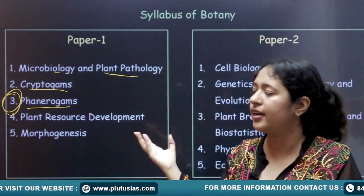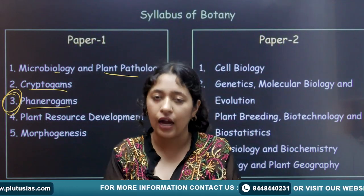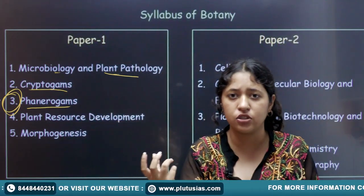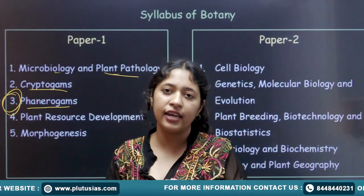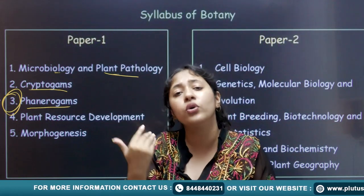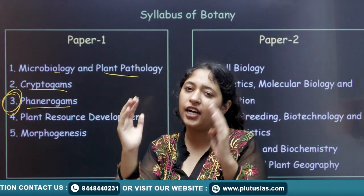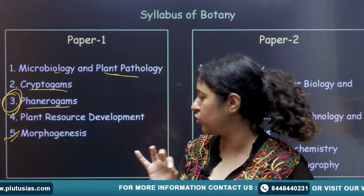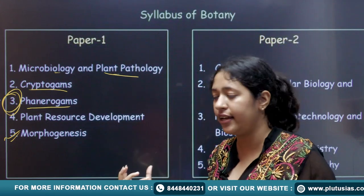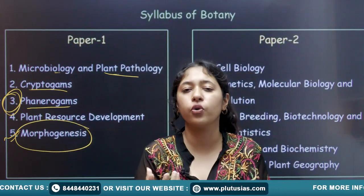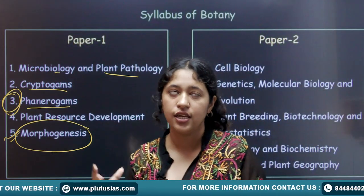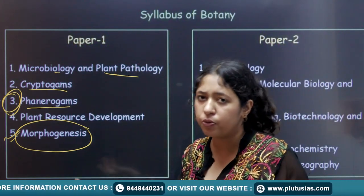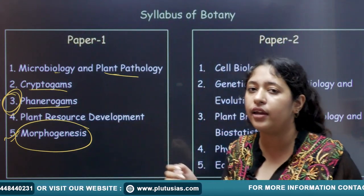The fourth unit is plant resource and development, which is essentially economic botany. Study the plants by grouping them — for example, resin plants, gum plants — and create your own groupings for easier study rather than using ready-made lists from books. Then we have morphogenesis, which is tissue culture. In tissue culture, you study micropropagation and different techniques. You will also study about an Indian scientist — Guha and Maheshwari for haploid culture. Wherever Indian scientists appear, always mention them; their experiments are very important.